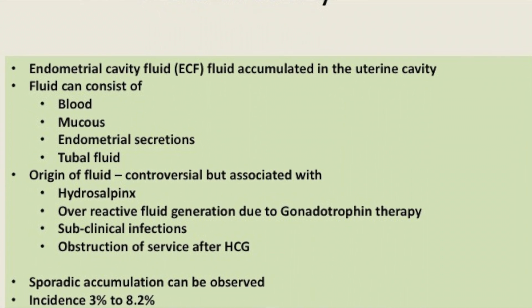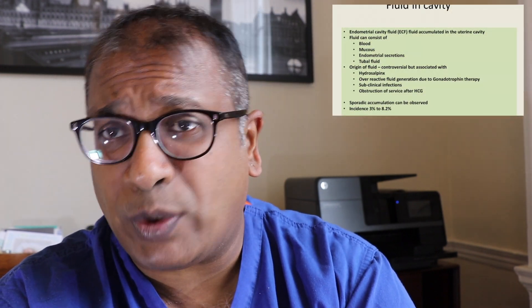The question is: where does this fluid come from? There are many reasons. One of the commonest is that it may come from a hydrosalpinx or damage in the tubes. It may come from aggressive stimulation of the ovaries with high progesterone levels leading to fluid collection and overactive fluid generation in the endometrium. It can come due to infections, and it could also come after an HCG trigger.